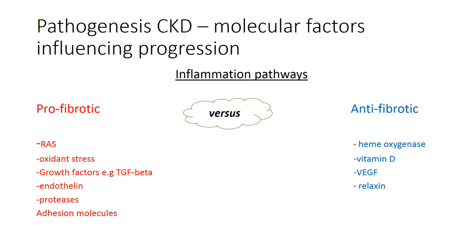Looking at the inflammation triggered by hyperfiltration, certain factors are produced that enhance it — such as the renin-angiotensin system, oxidant stress (for example in patients with anemia), growth factors like transforming growth factor, endothelin, adhesion molecules, and proteases. Factors that tend to reduce inflammation include hemoxygenase, vitamin D, and relaxin.